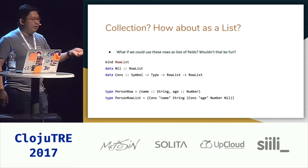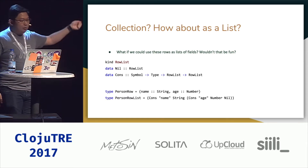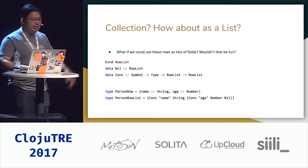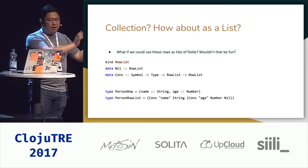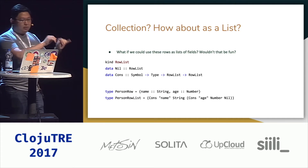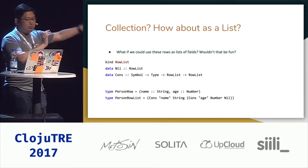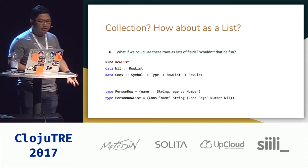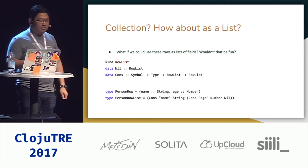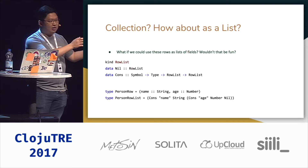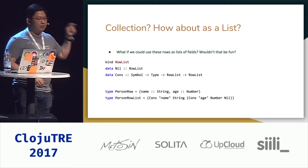In PureScript we have a kind called RowList, and the row list has two constructors: Nil, which is the empty list, and Cons, which is a pairing of the key and the value of the record rows, and then the rest of the list. So if you take the Person row from before — name string, age number — this turns into Cons of the name symbol and string, then Cons of the age symbol and number, and then Nil.